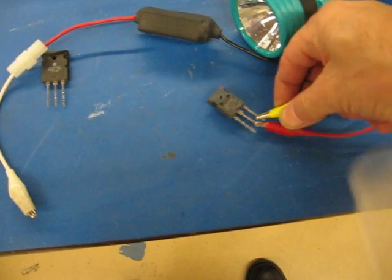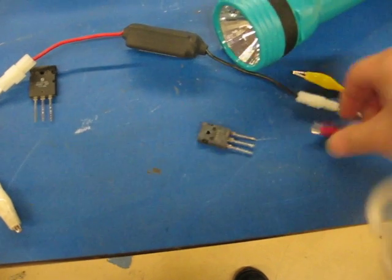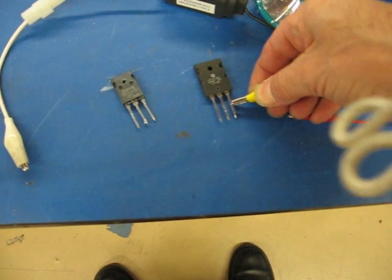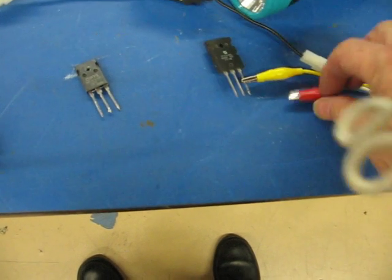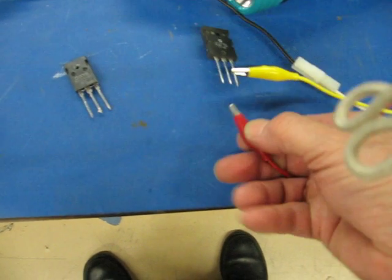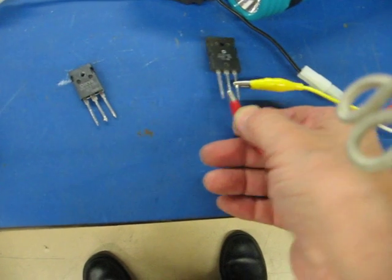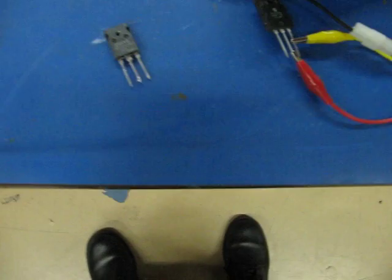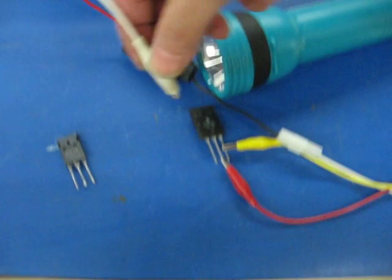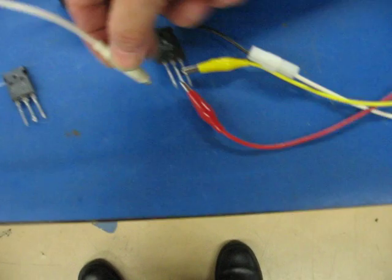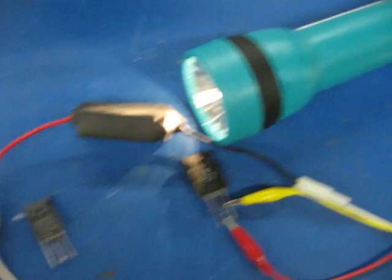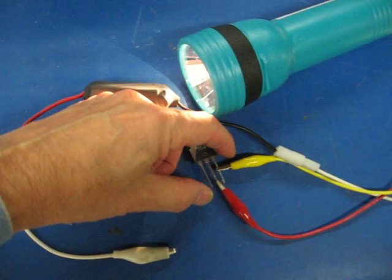So on a MOSFET we connect to the source negative and connect to the drain positive and then touch the lead of the gate. The light turns on and then you can ground it and turn it off.